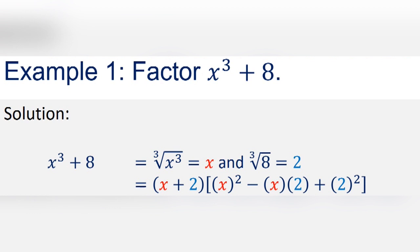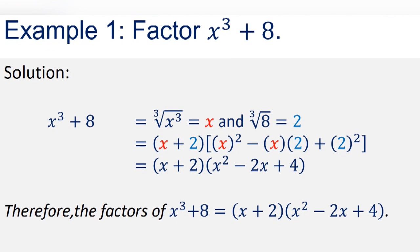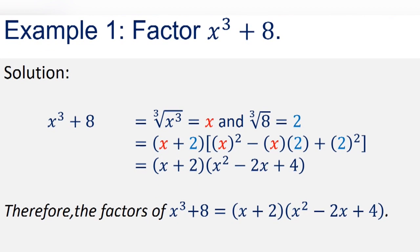Sample number 1: factor x cubed plus 8. Step 1: cube root of x cubed is x, and cube root of 8 is 2. Step 2: since the operation is addition, the first factor is x plus 2. Step 3: form the trinomial factor — square x to get x squared; multiply x and 2 with a negative sign to get negative 2x; square 2 to get 4. Therefore, the factors of x cubed plus 8 are x plus 2 and x squared minus 2x plus 4.